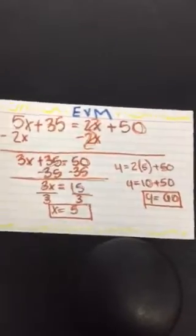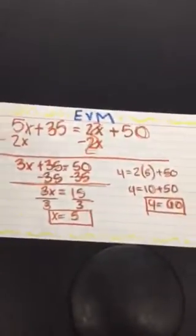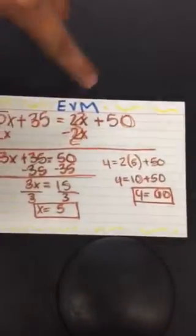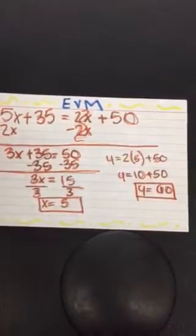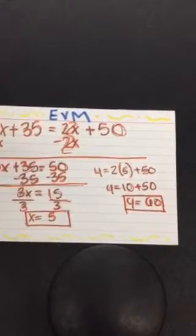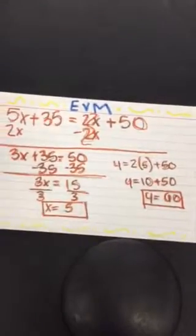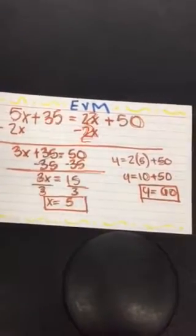We did equal values method. We first combined the two equations and then we subtracted 2X on both sides. Then got 3X plus 35 equals 50. So then we subtracted 35 on both sides, got 3X equals 15, divided by 3, and our answer was 5.